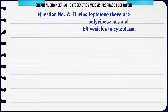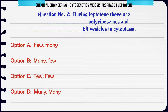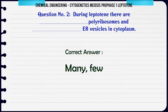During leptotene, there are polyribosomes and ER vesicles in the cytoplasm. A. Few, many. B. Many, few. C. Few, few. D. Many, many. The correct answer is: Many, few.